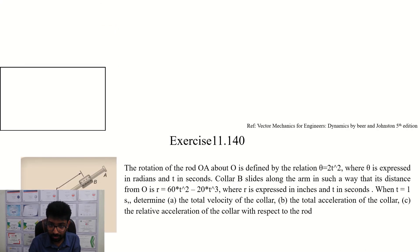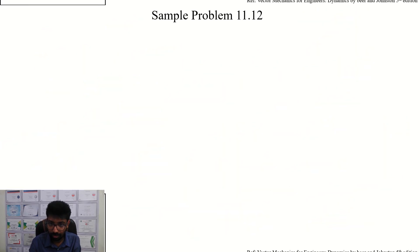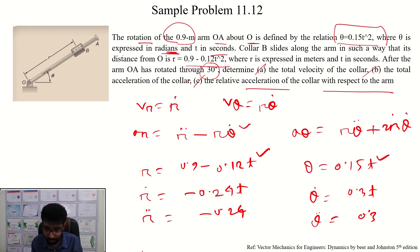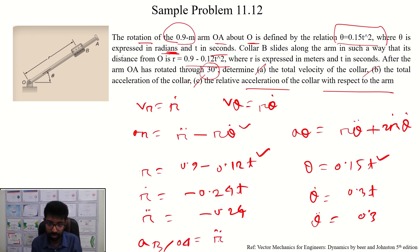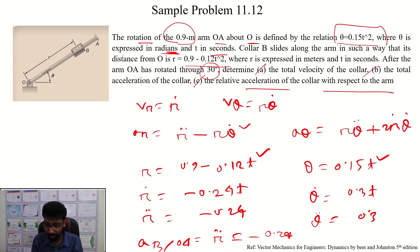What we are talking about is the derivative acceleration with respect to the arm. R-double-dot means the derivative acceleration of the collar with respect to arm. R-double-dot equals minus 0.24. This is the arm calculation.